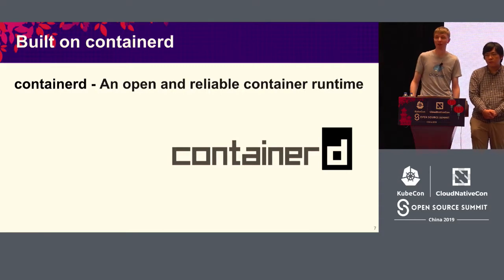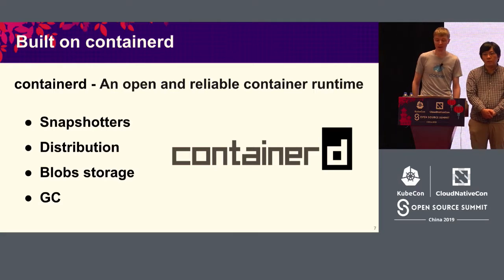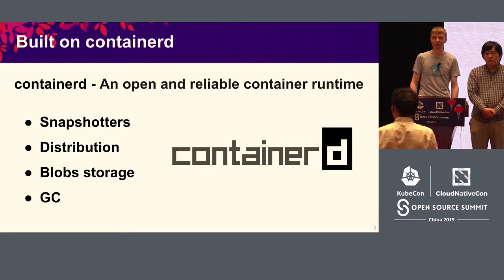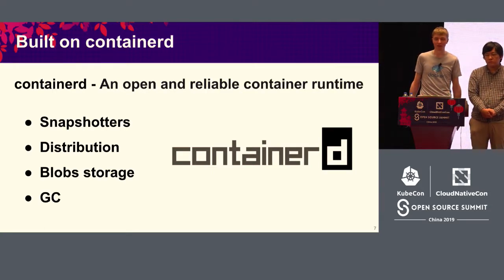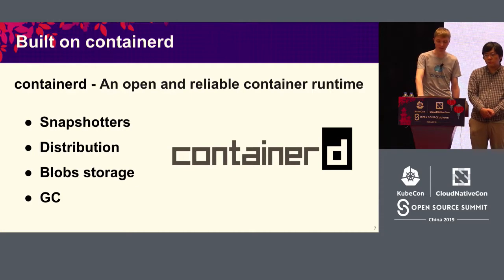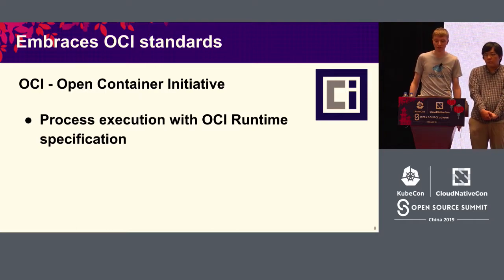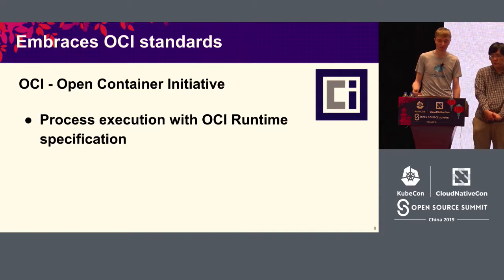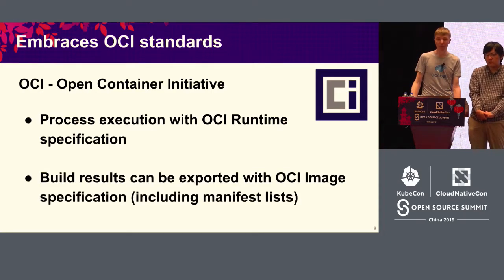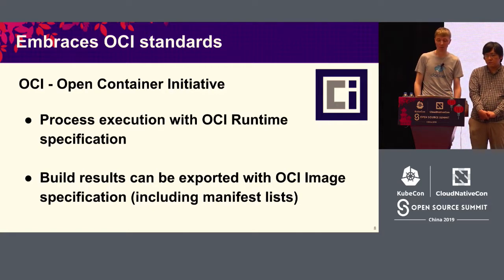BuildKit is a completely new project with a completely fresh code base. Of course, we don't want to reinvent the wheel when we don't have to, so it's based on the ContainerD work — it uses lots of code from ContainerD. Whenever we do an image pull, we use the ContainerD code and ContainerD snapshots for storage. You can even use BuildKit directly with the ContainerD daemon. We also want to play nice with all the Open Container standards. Every time you execute a process as part of your build, it's running through the OCI Runtime spec. Your images can also be exported with the OCI image spec.